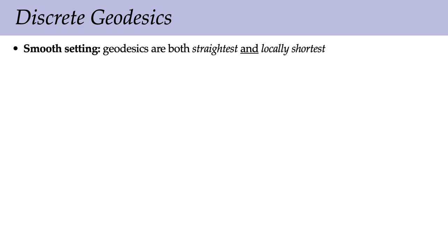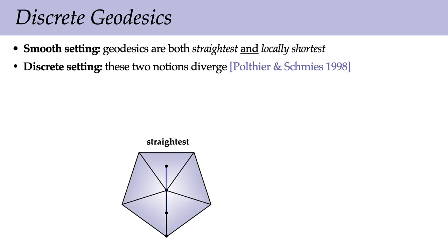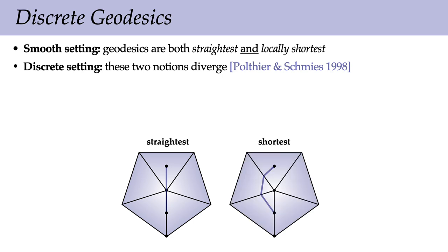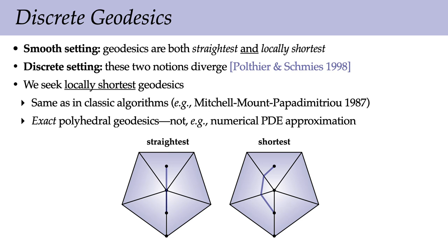First we have to agree on a definition for discrete geodesics. In the smooth setting, geodesics have two equivalent characterizations: they're both straightest and locally shortest curves. In the discrete setting, these two notions no longer agree. For instance, a straightest curve can pass through a vertex of positive curvature, whereas a locally shortest curve can always do better by going around a positive vertex. In our case, we're going to look for locally shortest geodesics — this is the same notion that shows up in classic algorithms from computational geometry like the Mitchell-Mount-Papadimitriou algorithm. What we want is exact polyhedral geodesics, not a numerical approximation from solving a PDE.